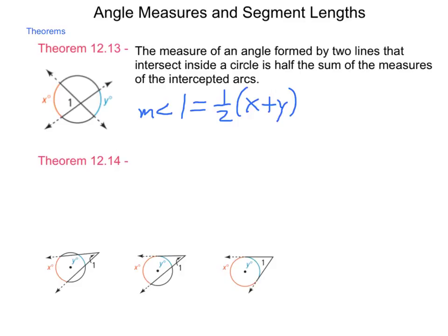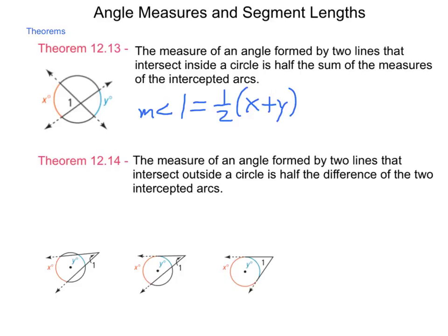Theorem 12.14 has a similar idea, but it works with lines that cross outside. And this one tells us the measure of an angle formed by two lines that intersect outside of a circle is half the difference between the two intercepted arcs. So pictured, you see three different representations of how this could happen.